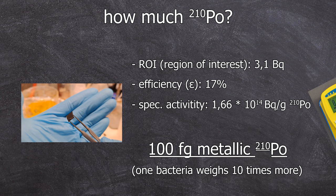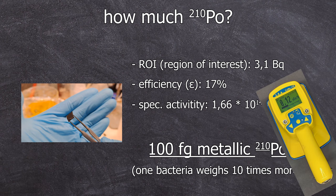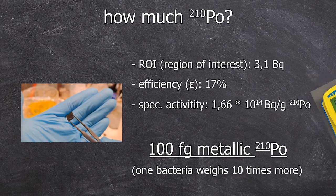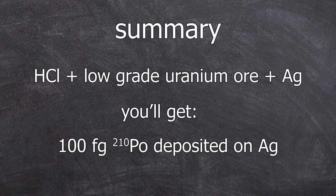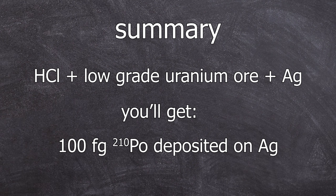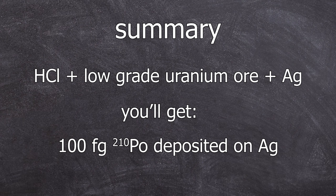For that, I measured it with this detector. So to summarize, with some hydrochloric acid and some uranium ore, you can extract measurable amounts of polonium from it onto a silver sheet. I would still not suggest you try it because you have a bunch of radioactive contaminated hydrochloric acid left after this experiment. I wanted to get that out. With that being said, goodbye!